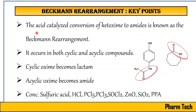Beckmann Rearrangement is an acid-catalyzed reaction mechanism that is used for the conversion of oximes of ketones to the amide. So we can say it is the acid-catalyzed conversion of keto-oxime to the amide.